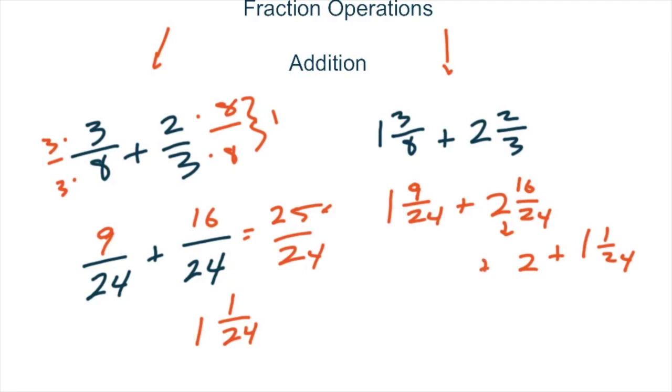And then we also need to put in this 1 right here, so we get 1 plus 2 plus 1 and 1 24th, which would be 1, 2, 3, 4, and 1 24th. Now, some students like to take these and make them into improper fractions, but if you remember to do the fraction parts first, then we can just add on the whole number parts afterward. It makes our life a lot easier.